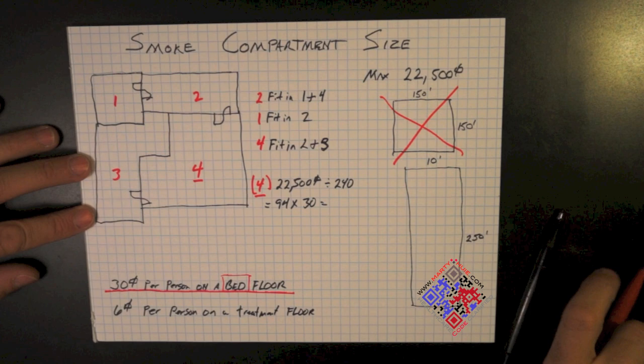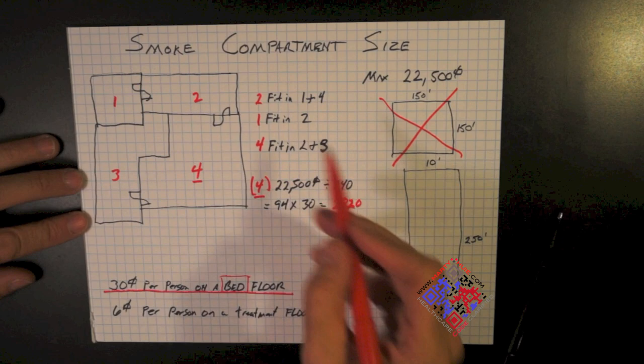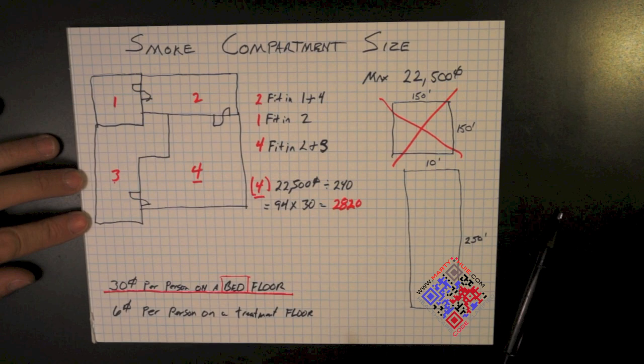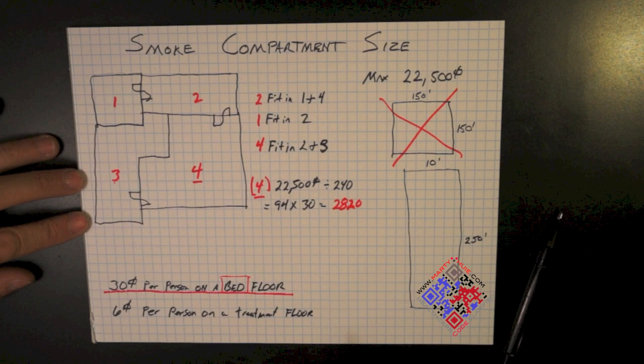And we multiply that by 30 square feet for the number of patients we need to move. That gives us 2,820 square feet of floor space we must find. This floor space can be in the corridors, offices, and other patient rooms. Cannot be any hazard space.